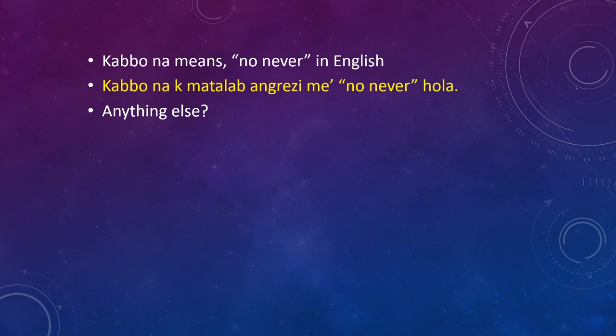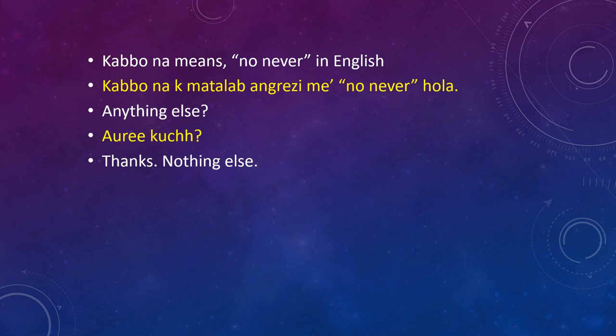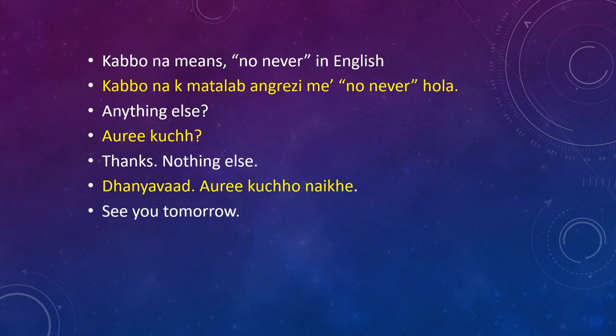Anything else? How do we say this? Auri kuch means anything else. Thanks, nothing else: Dhanya waad. Auri kuchu naikhe. Dhanya waad means thanks. Auri means and. Kuchu naikhe means nothing else. Kuchu means something, so kuchu naikhe means nothing.